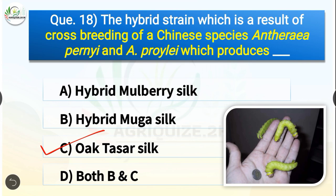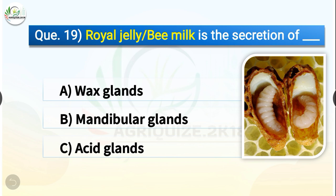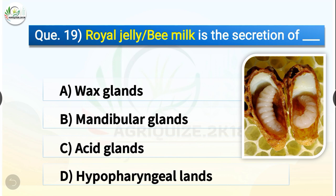Question number nineteen: Royal jelly or bee milk is the secretion of dash. The options are wax glands, mandibular glands, acid glands, or hypopharyngeal glands. The correct answer is option D — hypopharyngeal glands. Royal jelly, a substance secreted by the hypopharyngeal glands of worker honeybees, stimulates the growth and development of queen honeybees.